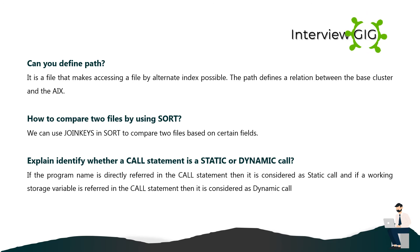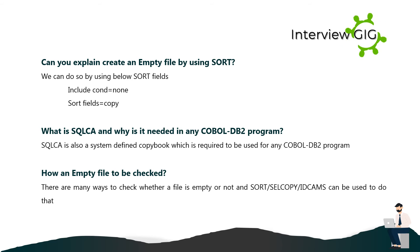Can you define PATH? It is a file that makes accessing a file by alternate index possible; the path defines a relation between the base cluster and the AIX. How to compare two files using SORT? We can use JOIN KEYS and SORT to compare two files based on certain fields. How to identify whether a call statement is static or dynamic? If the program name is directly referred to in the call statement, it is a static call; if a working storage variable is referred to, it is a dynamic call. How to create an empty file using SORT? We can do so by using: SORT FIELDS=COPY with INCLUDE COND=(none).